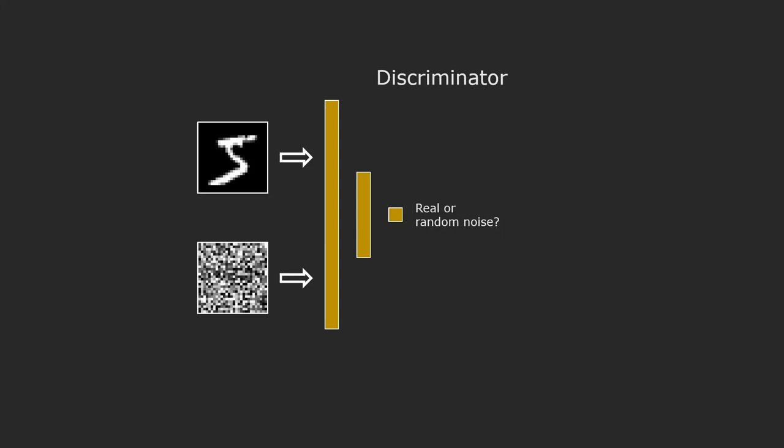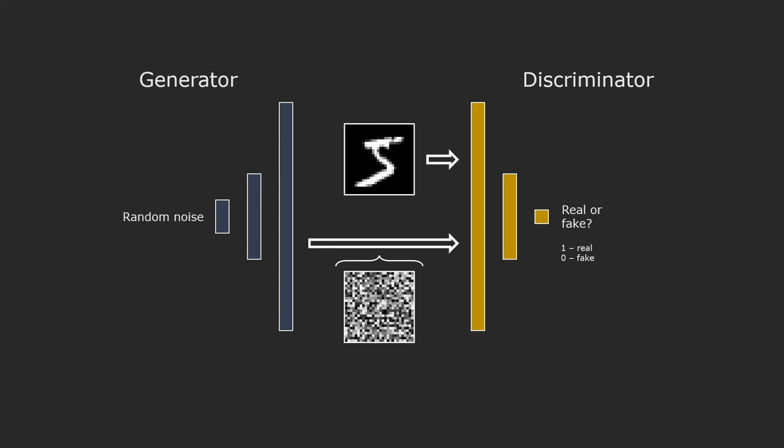Now this won't be that difficult for the discriminator as the random noise looks very different from the images in the dataset. So let's replace the random noise with a generator.